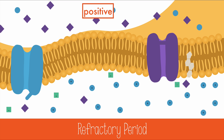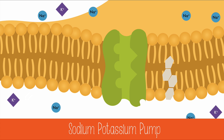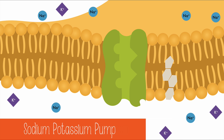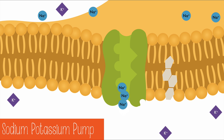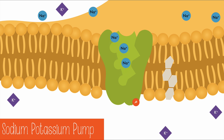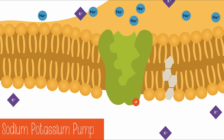But this means moving against concentration gradients, which means energy must be used. During the refractory period, the sodium-potassium pump will move 3 sodium ions out of the cell and 2 potassium ions into the cell with 1 ATP molecule.